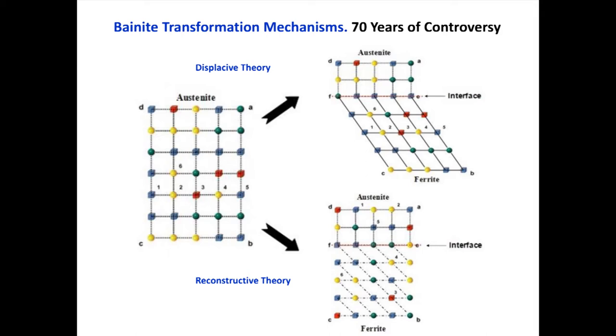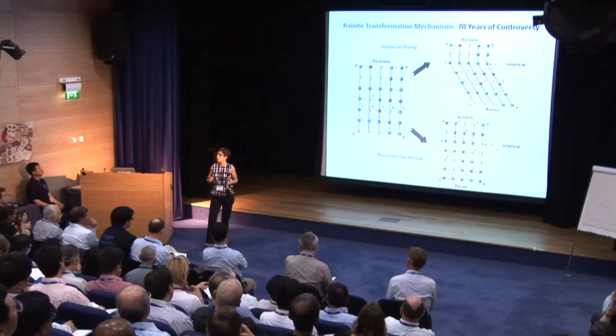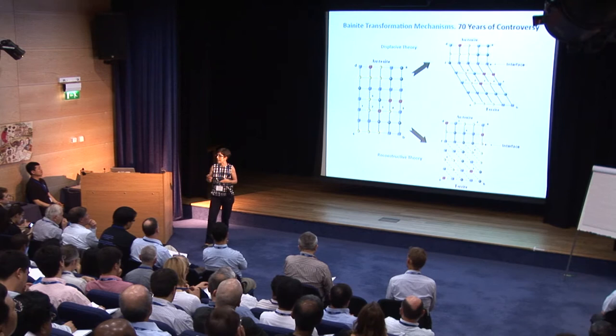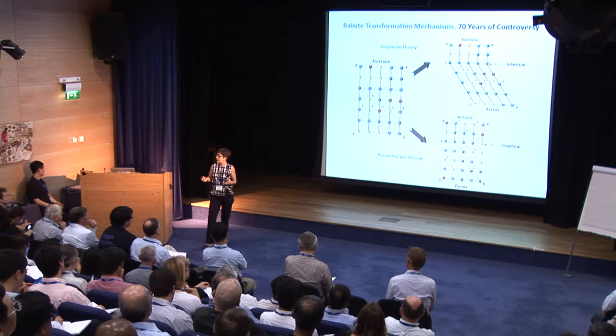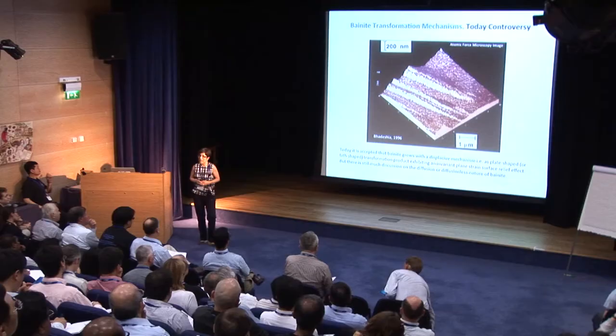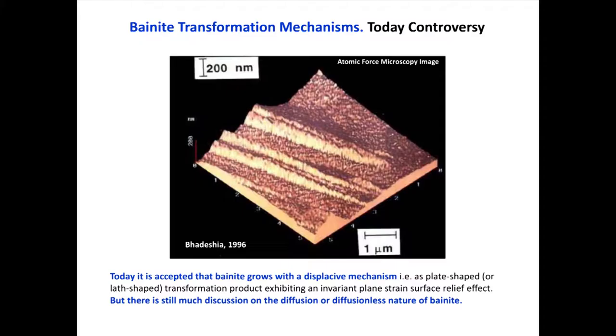At the same time in the literature, you can read the opposite explanation: that bainite transformation is a reconstructive transformation, taking place by movement of thermally-activated atoms, and that bainite ferrite grows by the movement of growth ledges on broad faces of the interface. However, today I believe it is generally accepted that bainite transformation is a displacive transformation.